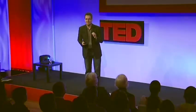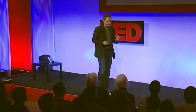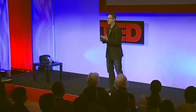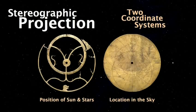The real genius of the astrolabe is not just the projection. The real genius is that it brings together two coordinate systems so they fit perfectly — the position of the sun, moon and planets on the movable reet, and their location in the sky as seen from a certain latitude on the back plate.